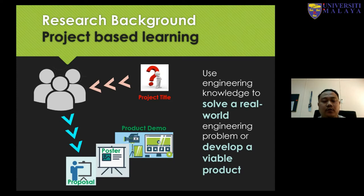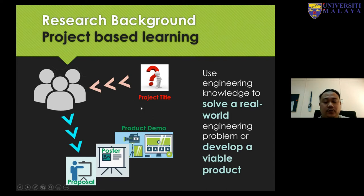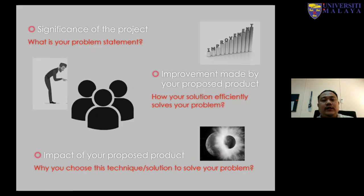Using a systematic design process, students need to provide a solution to the problem statement they have brainstormed. They come out with a proposal, present it, develop a product, and at the end demonstrate the product that solves the stated problem. However, we face some difficulties when asking students what the significance of the project is or what the problem statement is — their problem statements are often quite vague, very wide, or not specific.